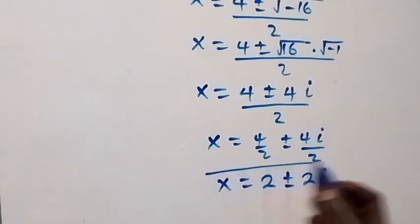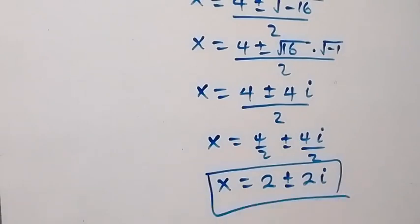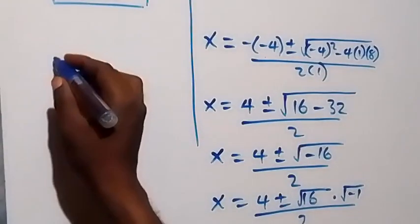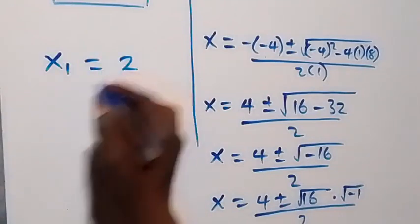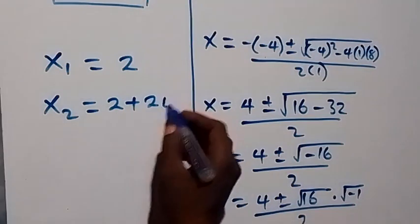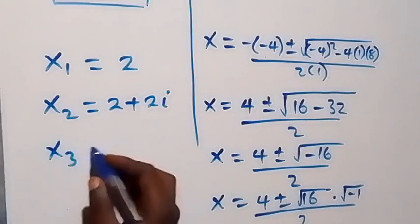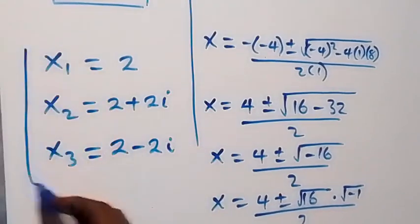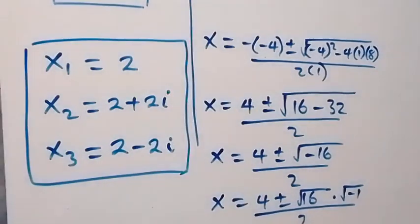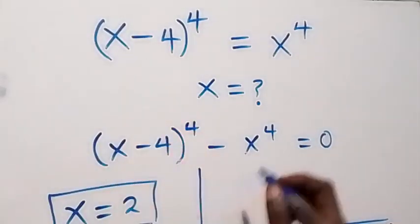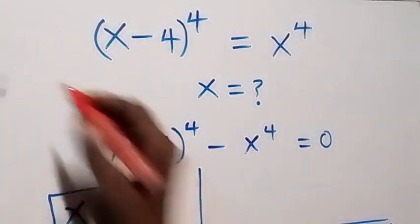So we have two other complex solutions from this side. Altogether we have three solutions: x₁ equals 2, x₂ equals 2 plus 2i, and x₃ equals 2 minus 2i. We can verify by substituting x equals 2 back into the original equation.